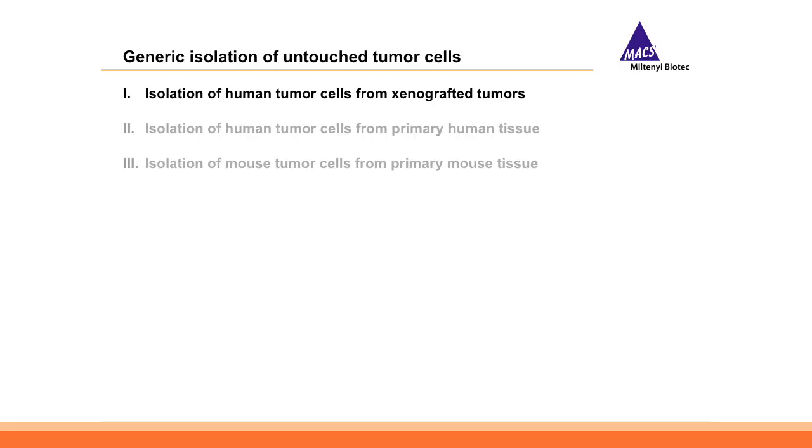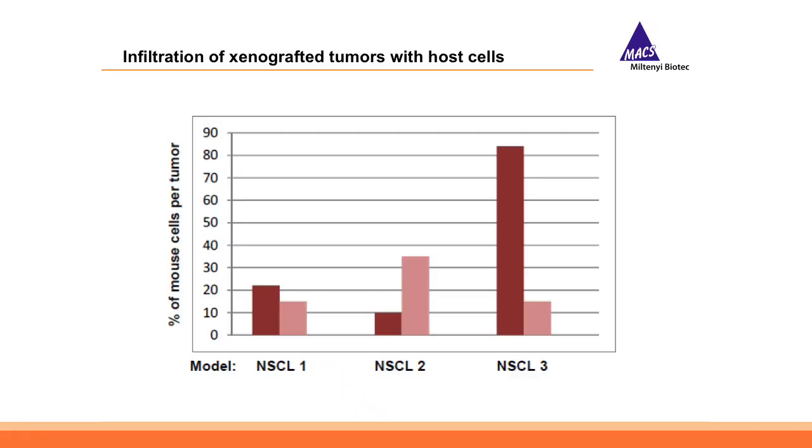When working with xenografts, during the growth phase in vivo they are infiltrated by cells of mouse origin. The degree and composition of infiltration is highly dependent on your tumor model, grow rate, site of injection, and many more factors. Shown here are three different non-small cell lung cancer patient-derived xenografts, and you can see a huge variety in the frequency of infiltrating mouse cells. Even if you keep the model constant and inject into both flanks of the same mouse, you see big heterogeneity in mouse cell infiltration, which always creates a bias in gene expression or proteome analysis.